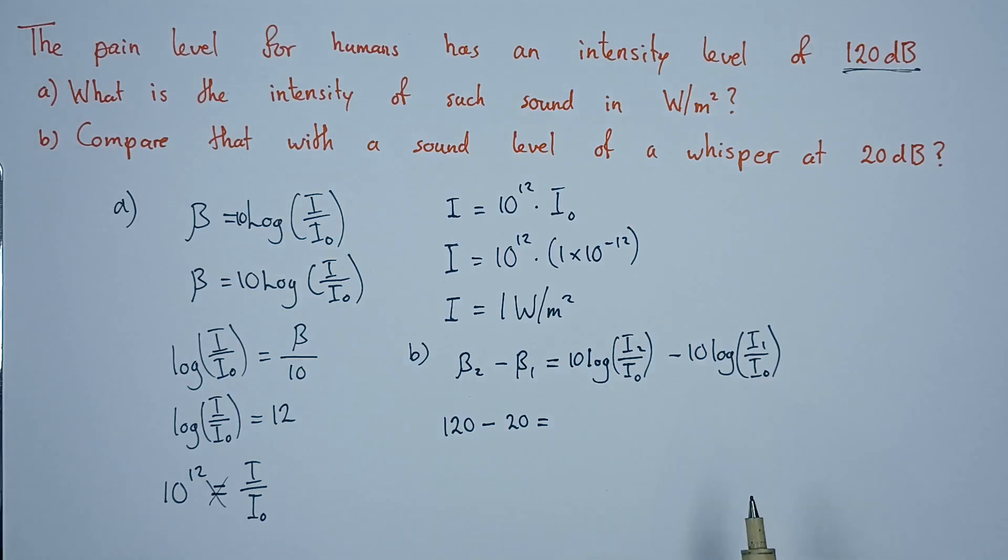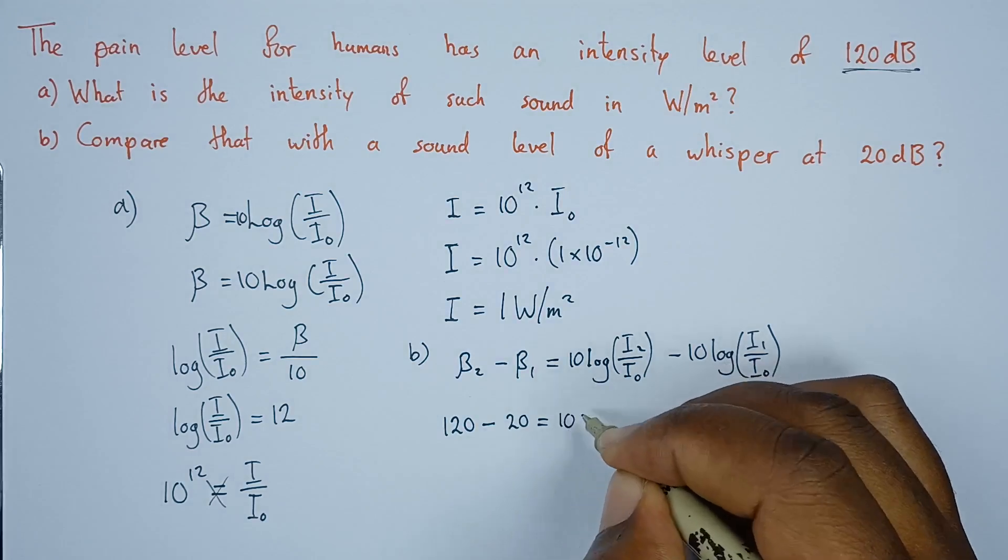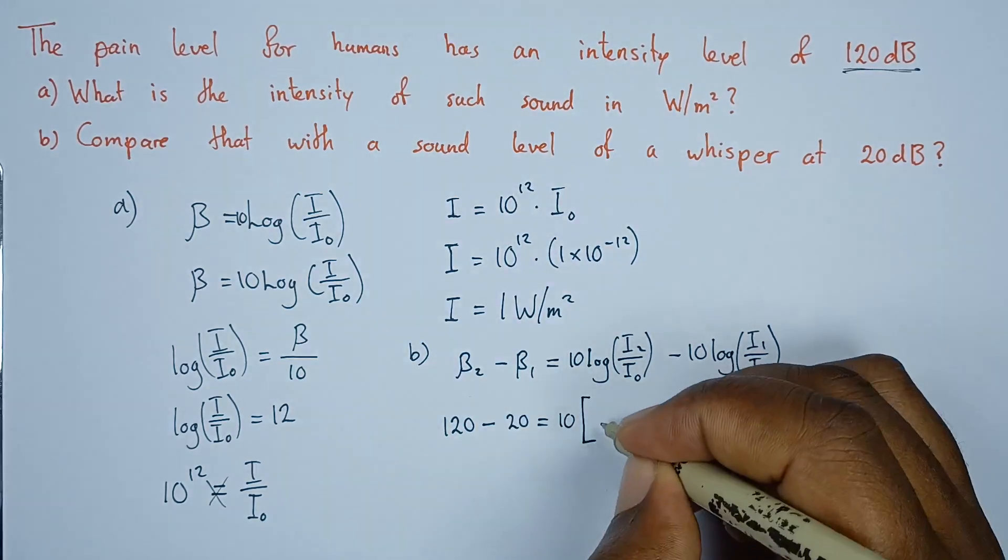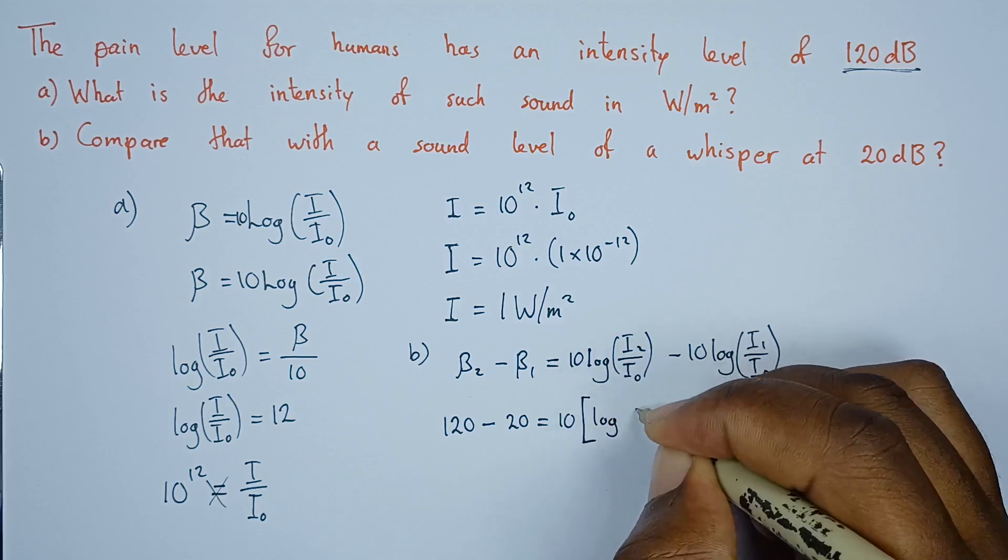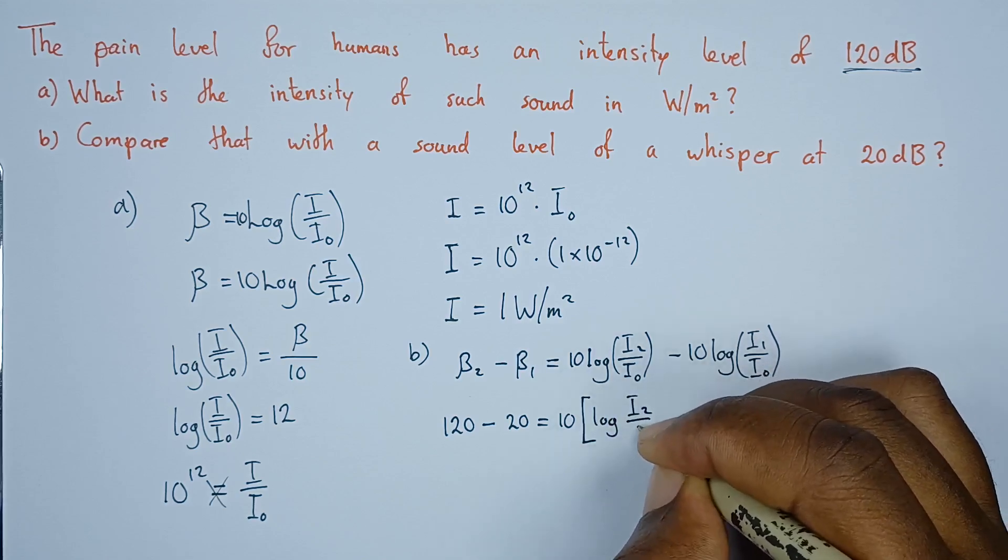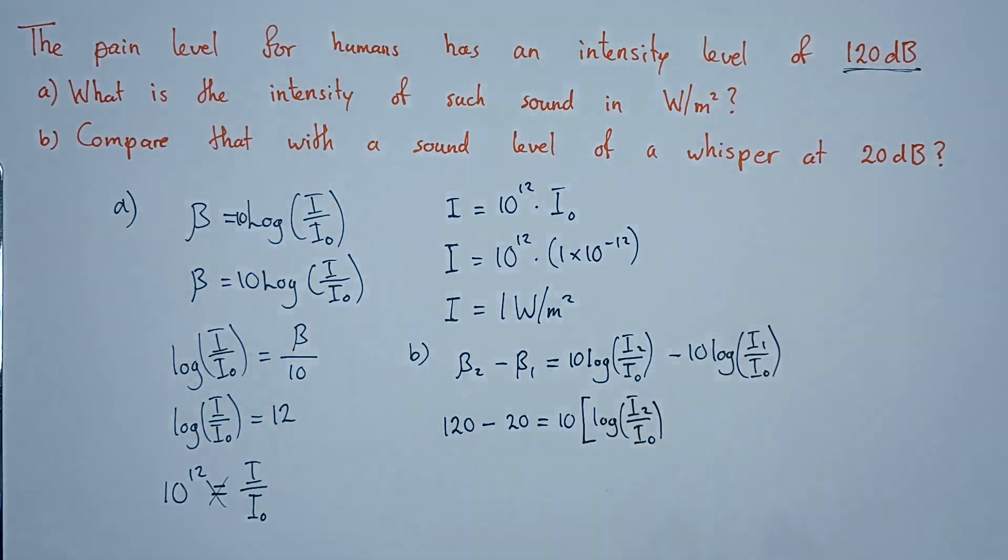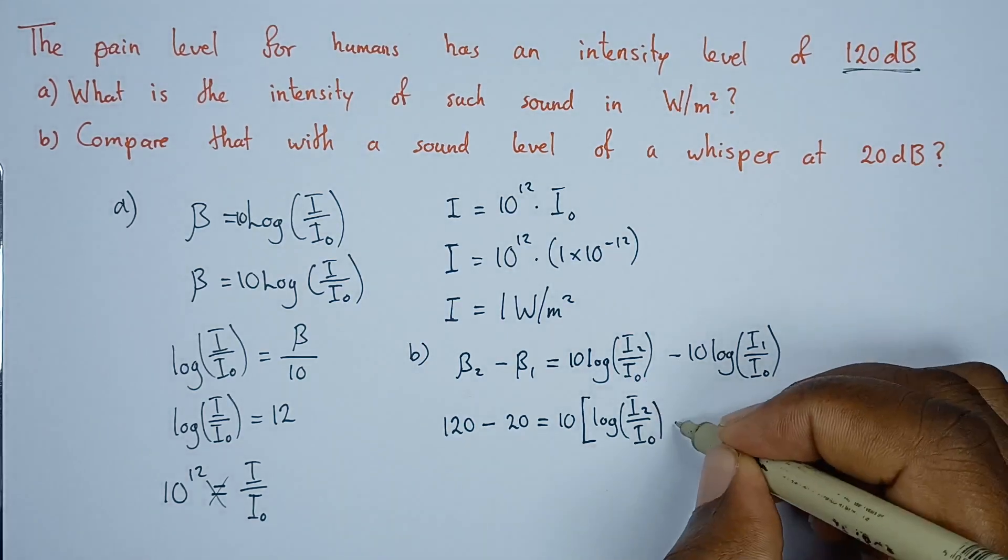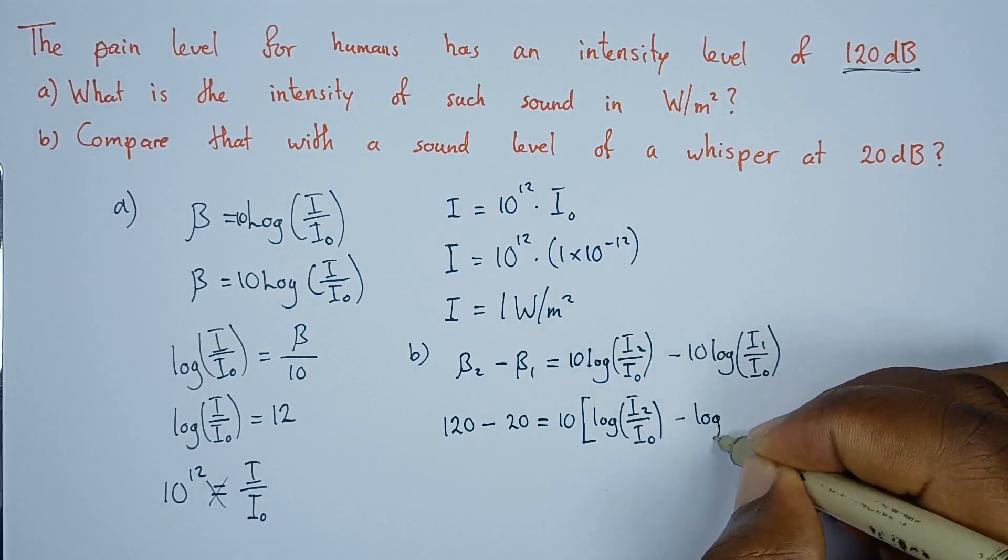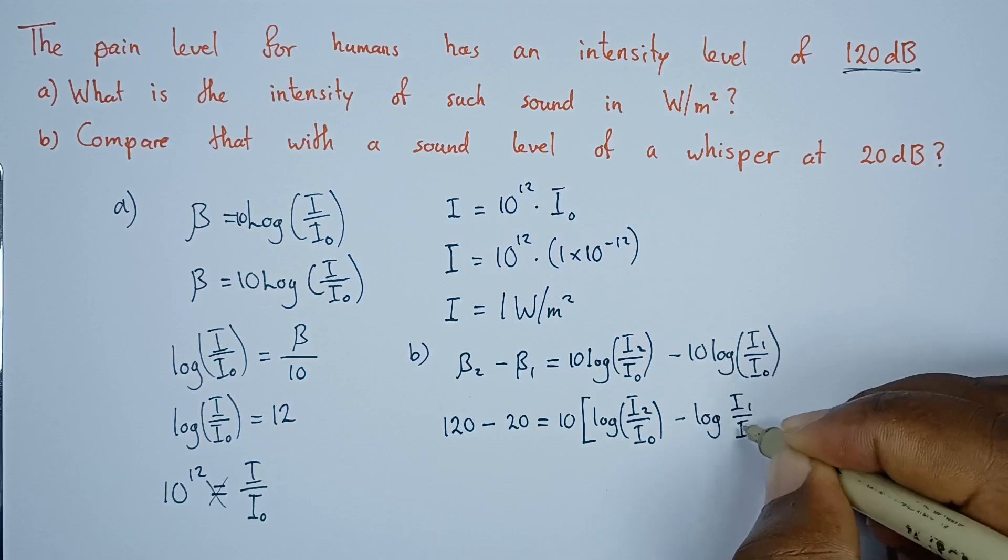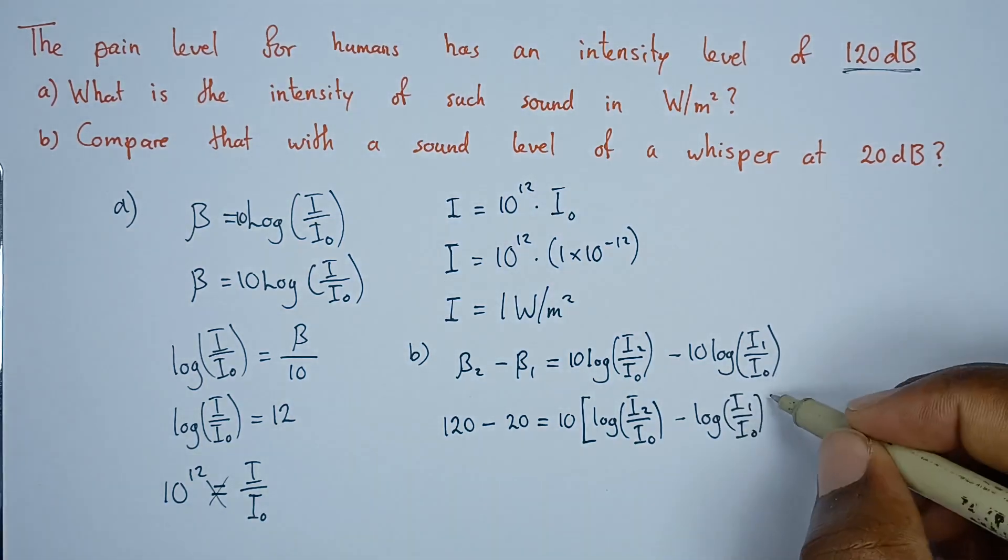On this other side, we can factor out what is common, which is a 10. What remains is log I2 over I naught. Since these two logs are subtracting, we can simply divide the arguments. Minus log I1 over I naught.